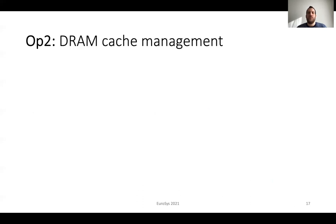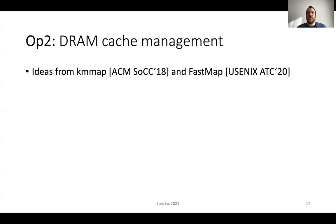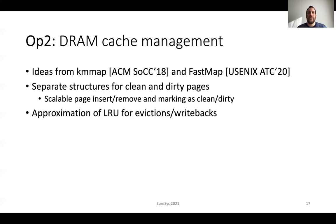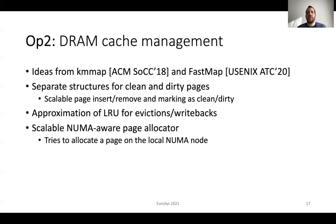The second operation is related to DRAM cache management. This includes ideas from our previously published works like KEMAP and FastMap. Similar to FastMap, it uses separate structures for clean and dirty pages, enabling scalable insert and remove operations combined with marking them as clean or dirty. Akila uses an approximation of LRU for evictions and writebacks. Akila also introduces a scalable NUMA-aware page allocator, which tries to allocate a page on the local NUMA node. This is required as we reduce the miss path costs and NUMA-related overheads are even more pronounced.